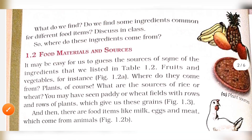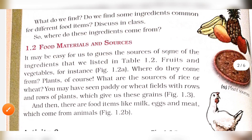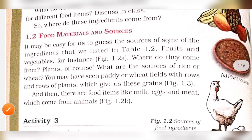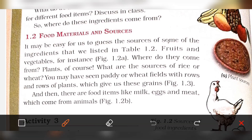Food materials and sources. It may be easy for us to guess the sources of some of the ingredients listed in the table. Fruits and vegetables, for instance — where do they come from? Plants, of course.